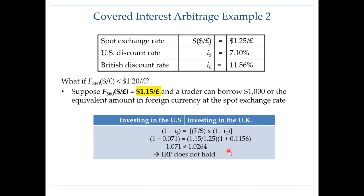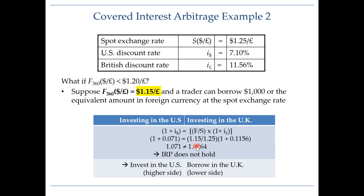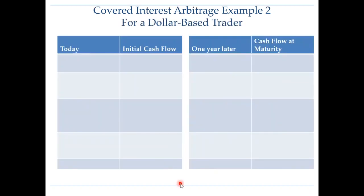We want to borrow where the number is lower, which means we need to borrow in the UK and invest in the US. In other words, borrow where the cost of borrowing is lower and invest where the proceeds will be higher, after accounting for exchange rate uncertainty. In our case, we use a forward contract to hedge that exchange rate uncertainty, so the bottom line is: borrow in the UK and invest in the US.